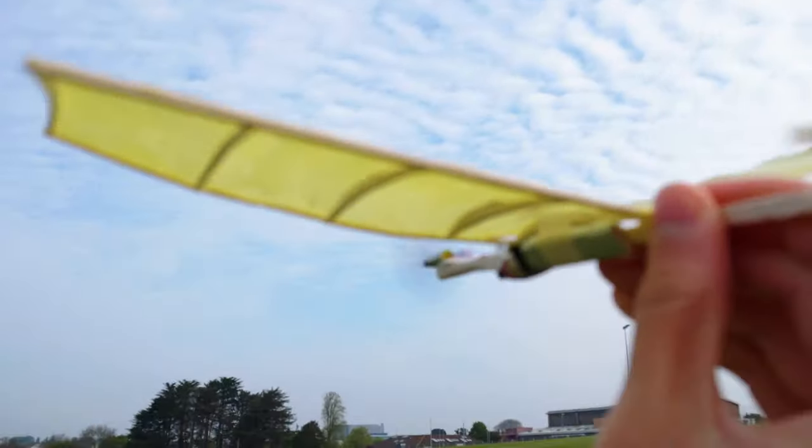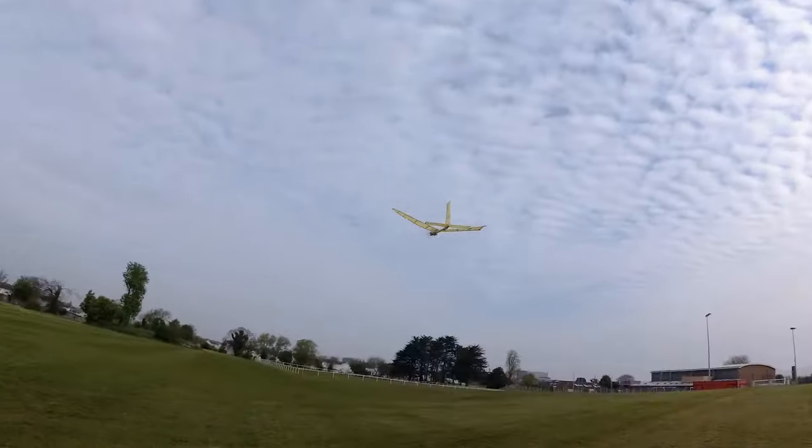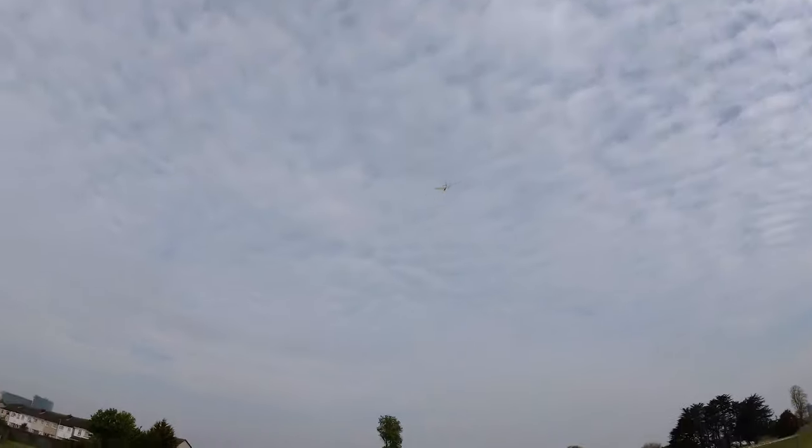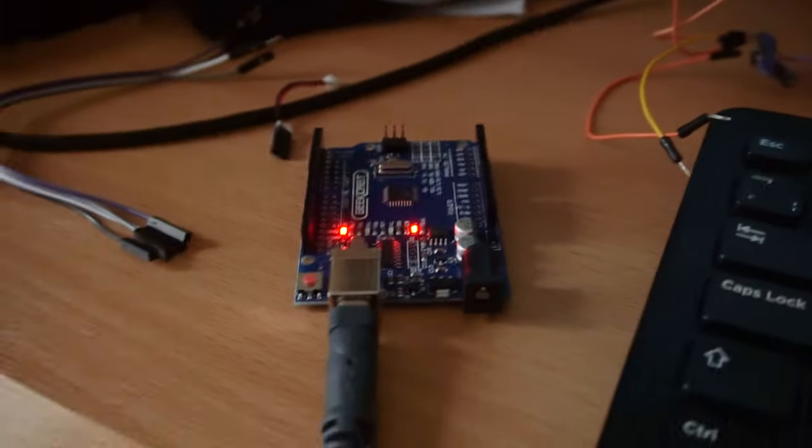Following the series of videos about free flight airplanes, today we are going to adapt an automatic electric propulsion system. For that I'm going to use the circuit that has a programmable microchip. I made this one in a previous video but I'm going to repurpose it for this project. Let's start.